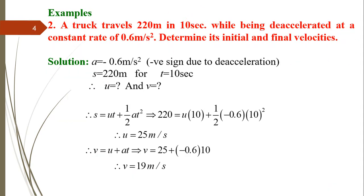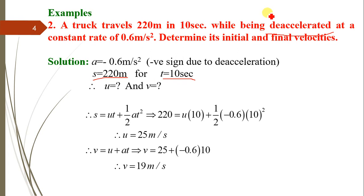Second example: a truck travels 220 meters in 10 seconds while being decelerated at a constant rate of 0.6 m/s². Determine its initial and final velocities. Here s = 220 m, t = 10 s, and since the truck is decelerating, the acceleration a = −0.6 m/s².